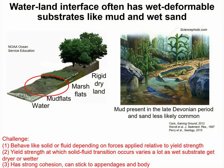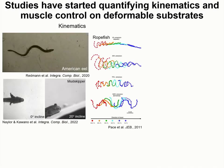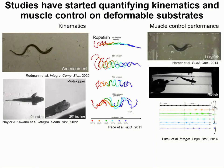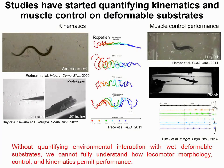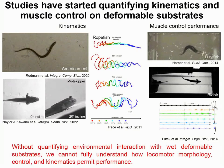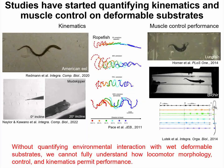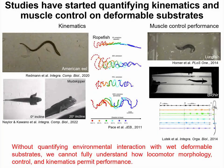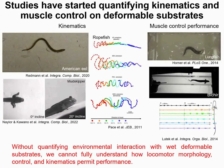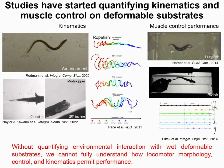The wet deformable substrate also has strong cohesion and can cause it to stick to the appendages and the body. Studies have begun to explain how the fishes move on wet deformable substrates by mainly quantifying the kinematics and the muscle control. Without quantifying the environmental interaction with the wet deformable substrates, we cannot fully understand how the locomotor morphology, kinematics, and control help permit performance.